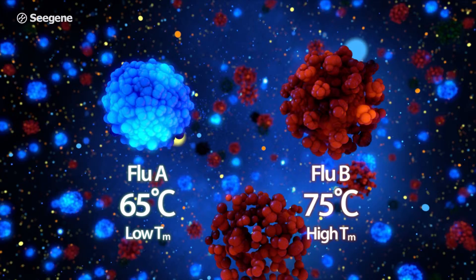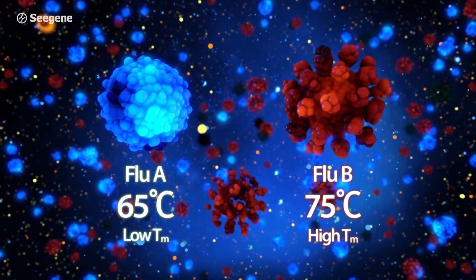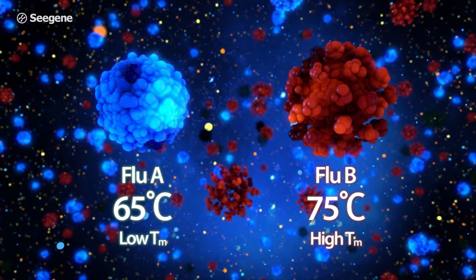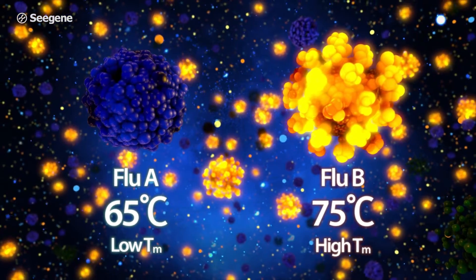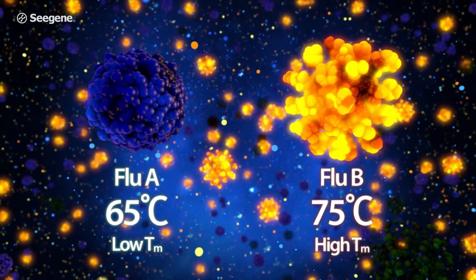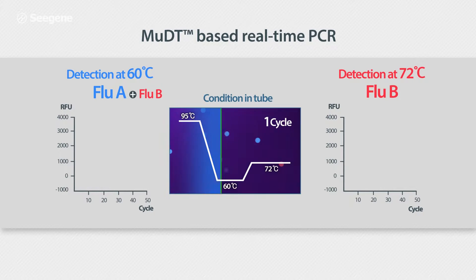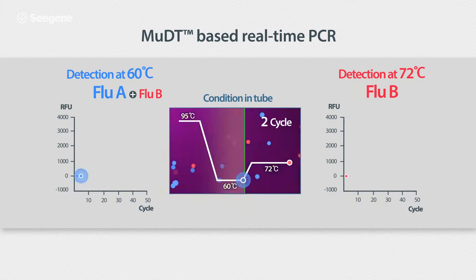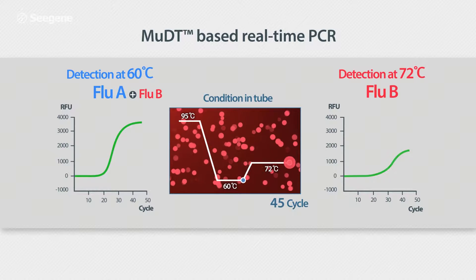To show how MUDT works, we designed two targets using Toast technology. The Flu A target is designed to emit a robust signal at less than the relatively low temperature of 65 degrees Celsius. The Flu B target is designed to emit a robust signal at less than 75 degrees Celsius. We then selected two detection temperatures: 60 degrees Celsius and 72 degrees Celsius — these are the temperatures where fluorescent signals will be collected.